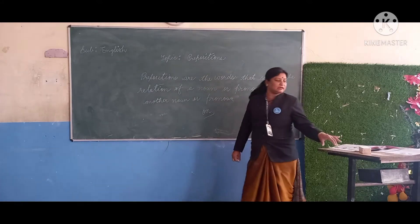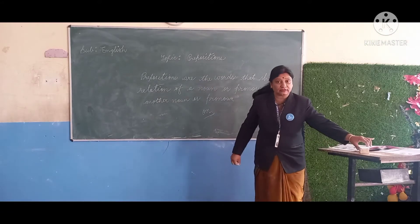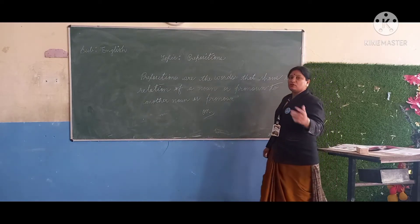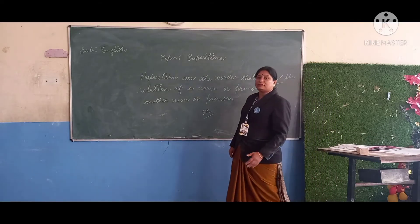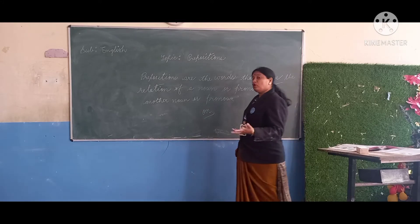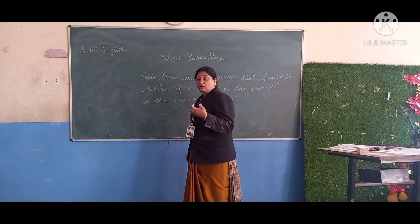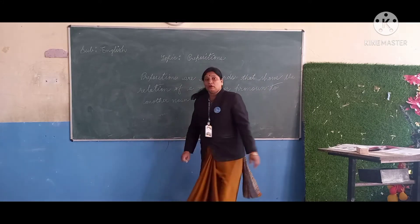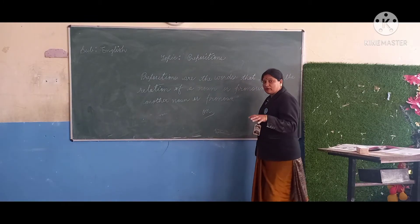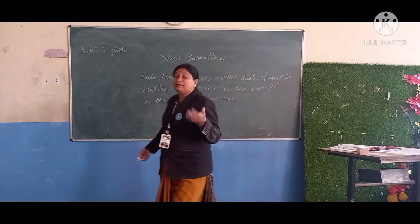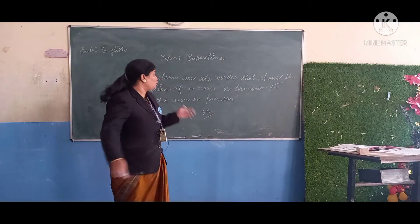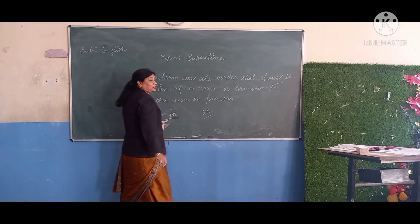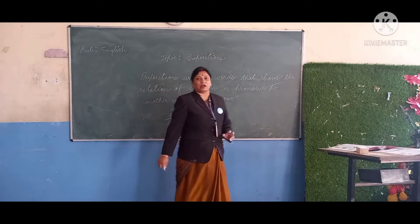If something is over something else, we use 'on' — for example, we are sitting on the chair. That is showing the position. And if something is inside something, for example, I am in the classroom — we use 'in'. These words — on, in, at — are prepositions.